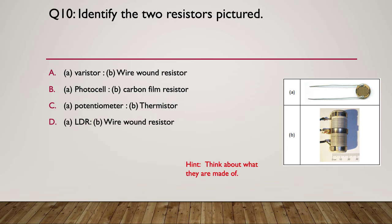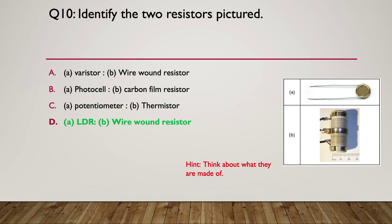Think about what they're actually made of — have a look and think about what they're made from. The answer is D: A is a light dependent resistor — you can see the light-dependent substrate with a clear coating over the top so light can reach it — and B is a wire wound resistor with two tappings.